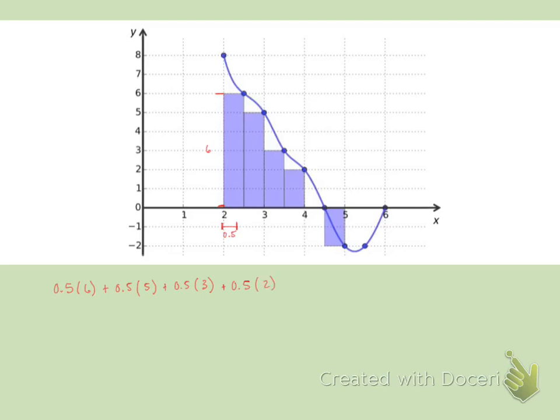From four to four and a half, technically, the width is 0.5, and the height is 0. And then for the last one, the width is 0.5, but the height is negative two, since it's below the x-axis.